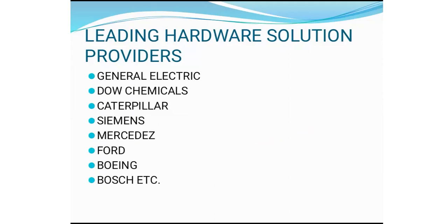Each of these companies plays a distinct role. General Electric is a conglomerate; Dow Chemicals deals with around 10 to 12 industry divisions; Caterpillar mainly focuses on heavy machinery; Siemens deals with electronic items and has water treatment and chemical processing divisions; Mercedes and Ford are primarily focused on the automotive sector; Boeing is in the aircraft sector; and Bosch covers automotive parts, aircraft parts, and all kinds of parts — and is also involved in software.